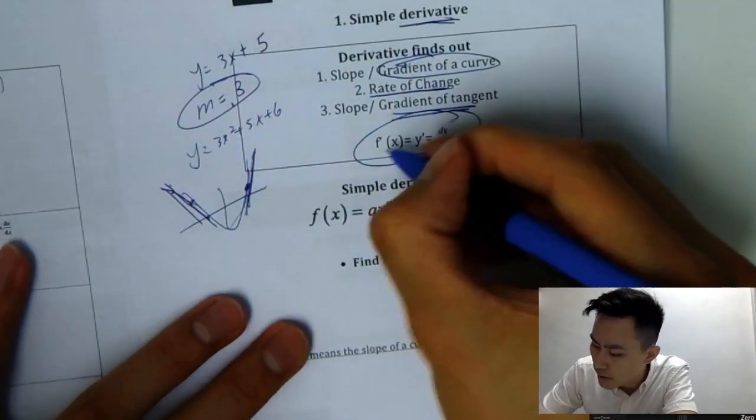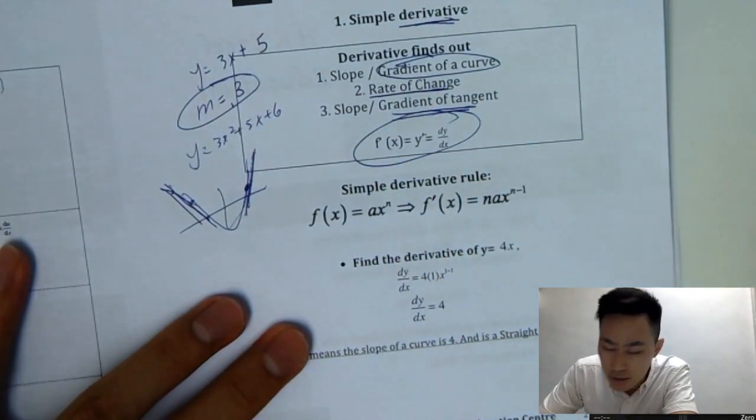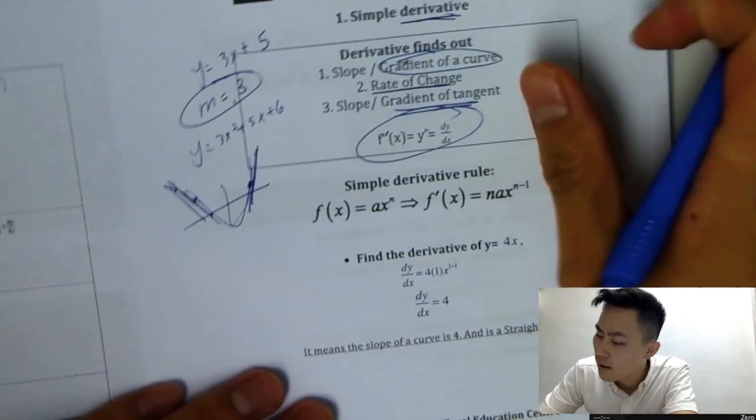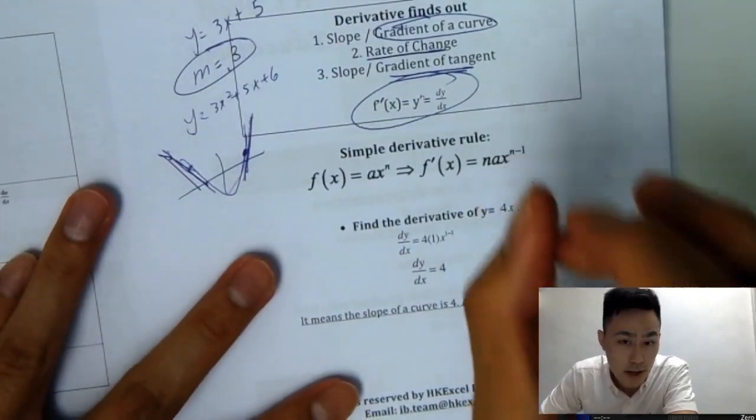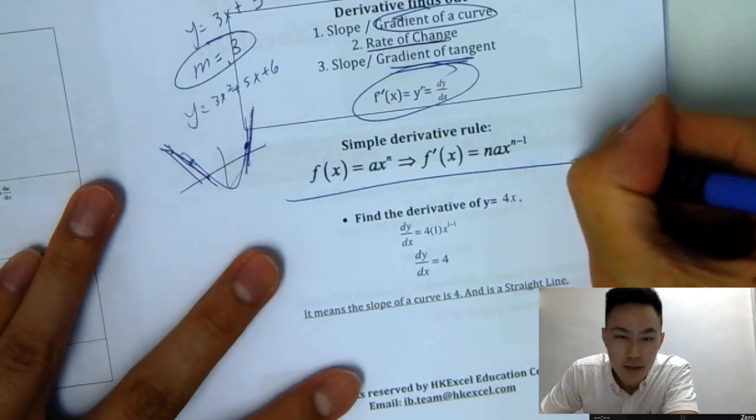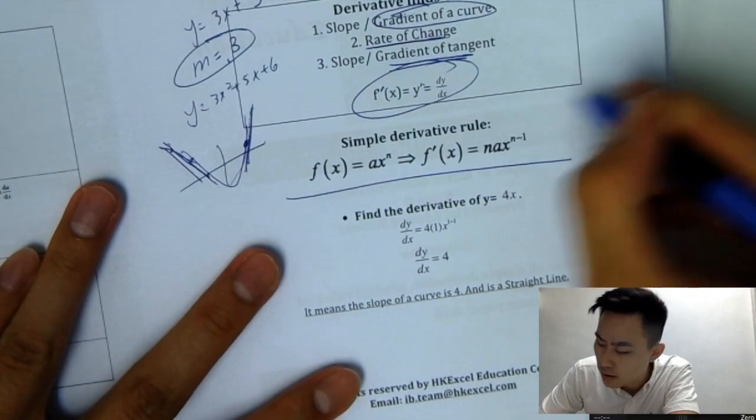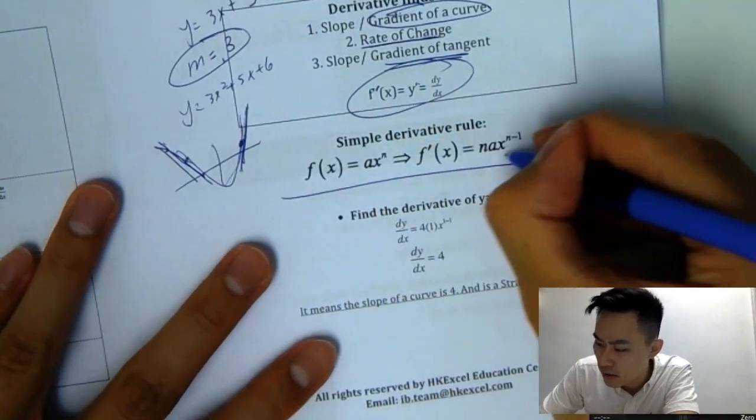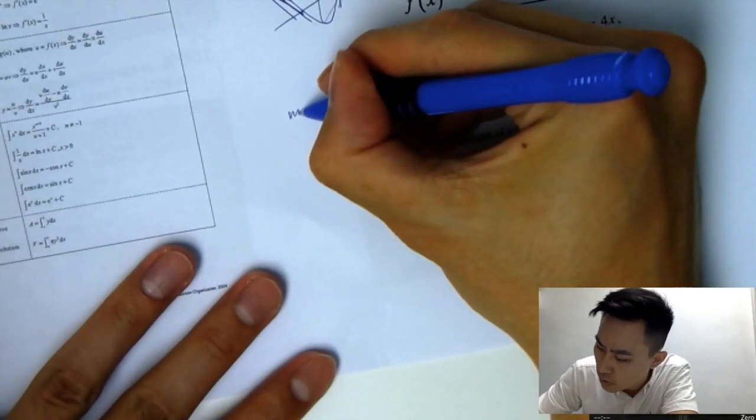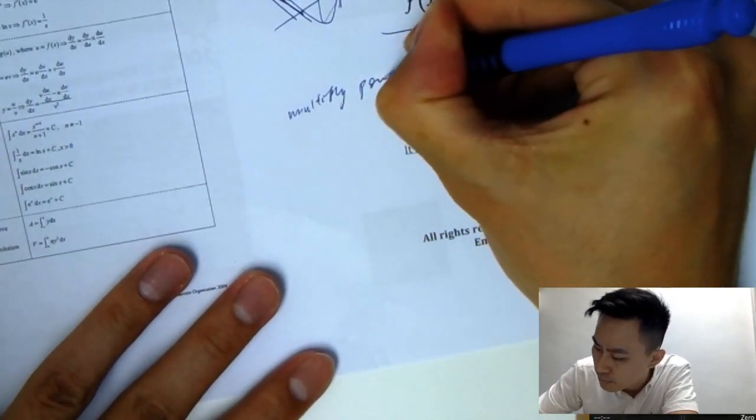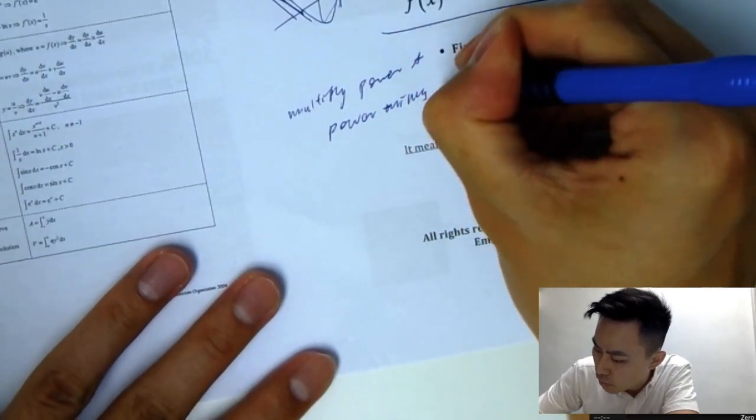And differentiation's simple. You can write it in three ways. f prime of x, y prime, and then dy over dx. We have a dot right here. And the way you work out for derivatives, very simple. Just need to apply the simple rule that I teach you right now. You can see on your textbook or data book, they will usually give you a very complicated equation, like axn, and then you have all the symbols. You can ignore all that. So I'll teach you a very simple way. Just need to memorize the way I teach you right now. Multiply power. And power minus 1.